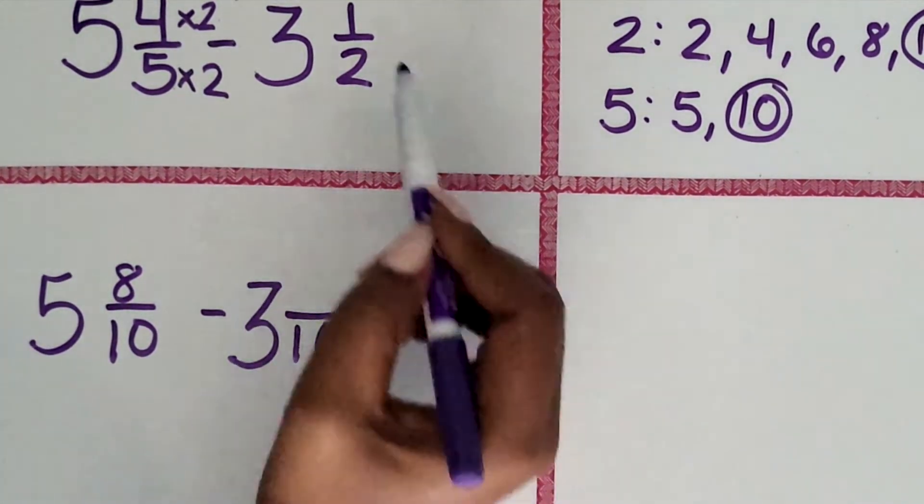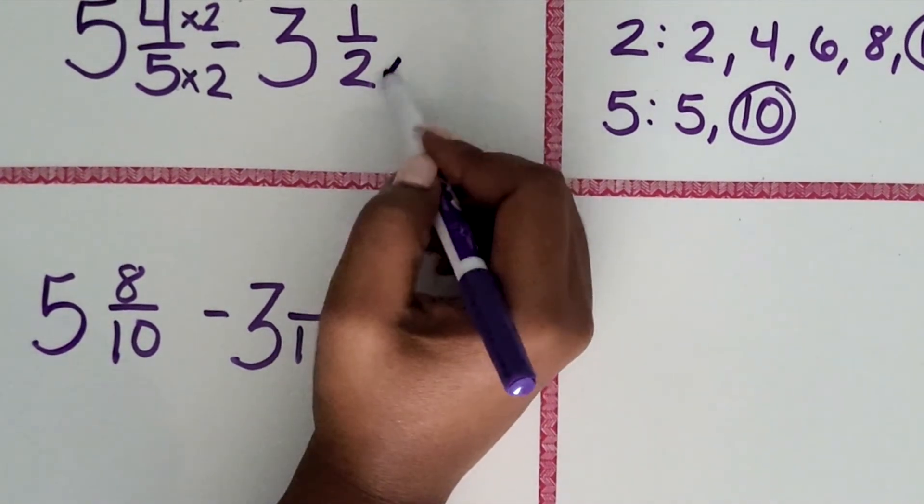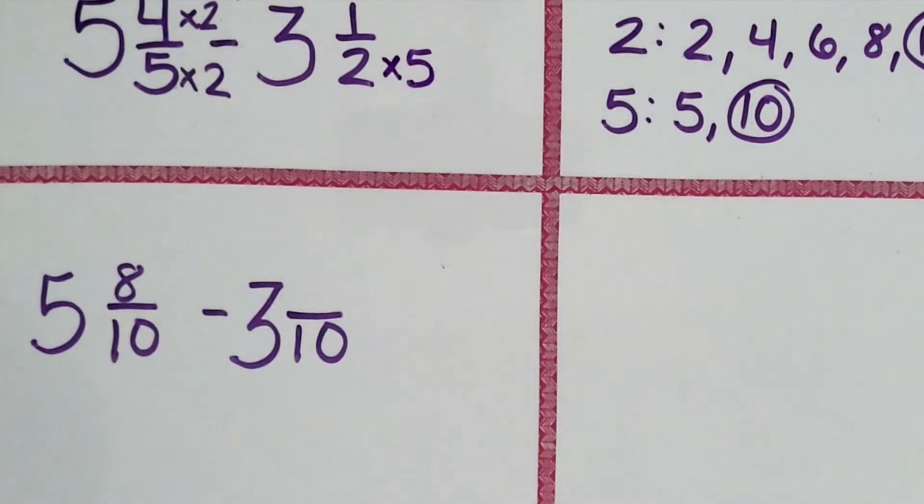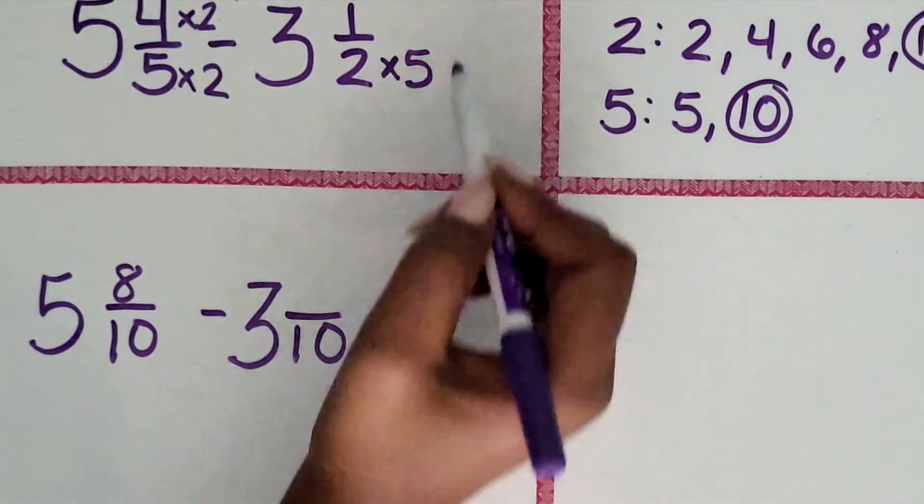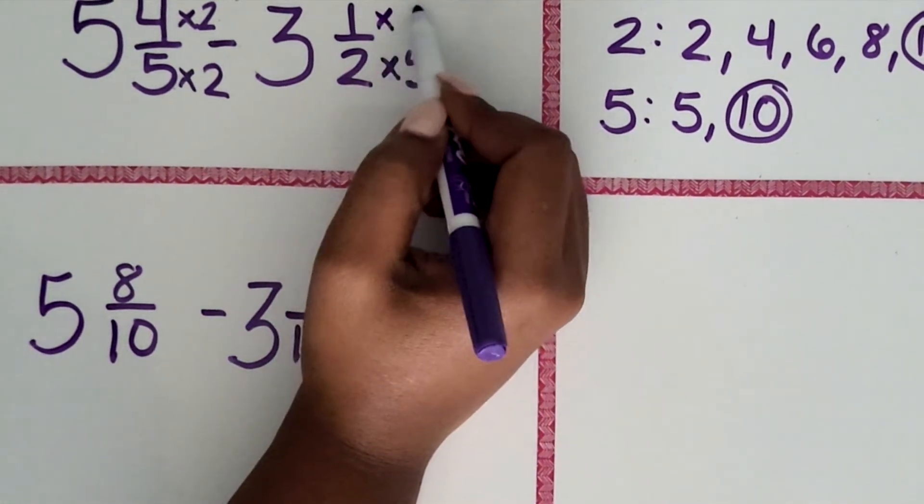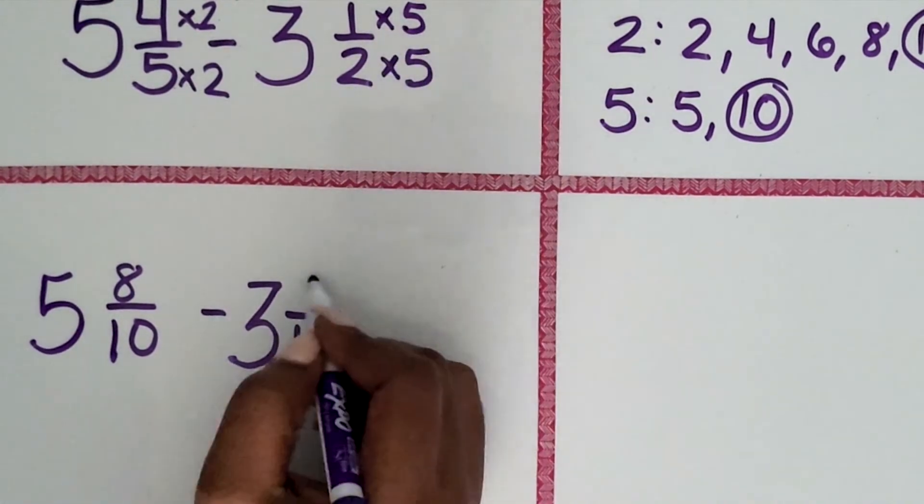Now let's think about how do we go from 2 to 10. 2 times 5 is 10. So 1 times 5 equals 5.